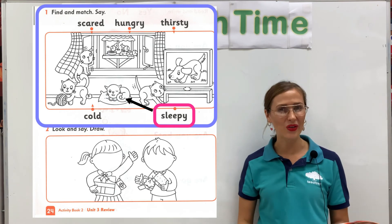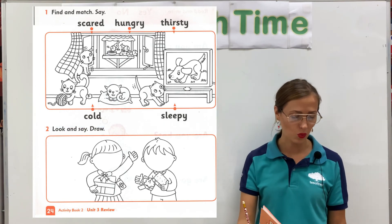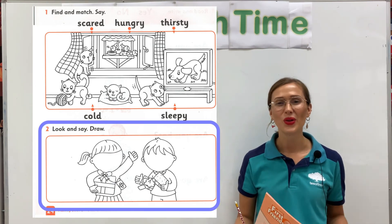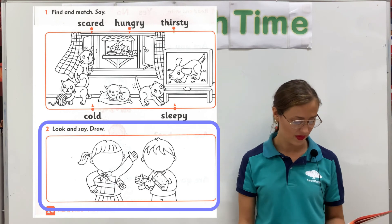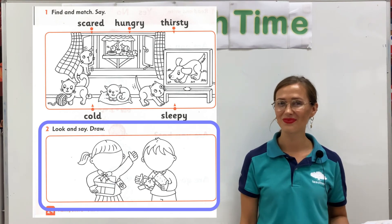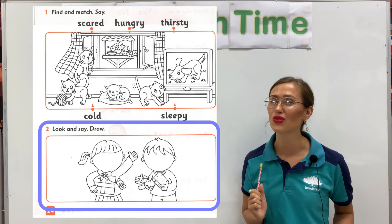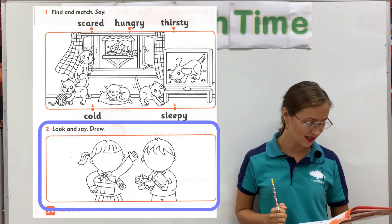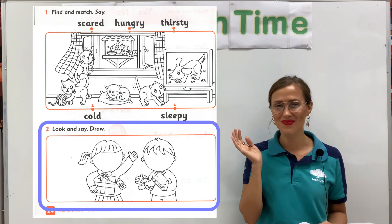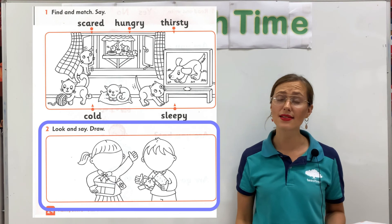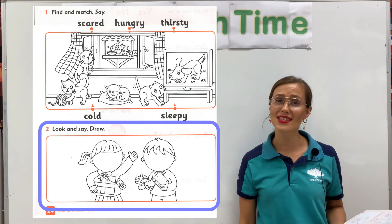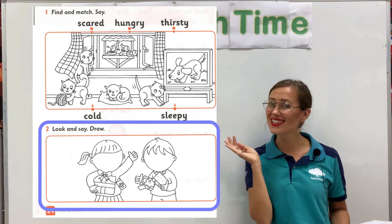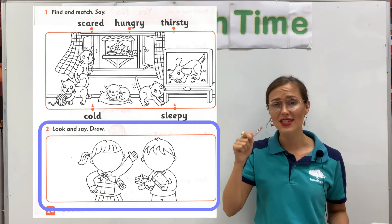Okay kids, well done. This was section one. Now, if you look down here, section two. You see a girl and a boy. I want you to draw two feelings. The girl is happy and the boy is sad. Can you draw a happy face and a sad face?